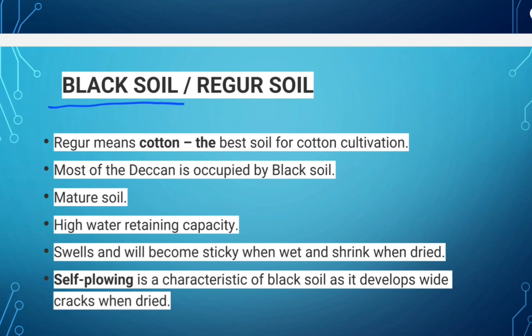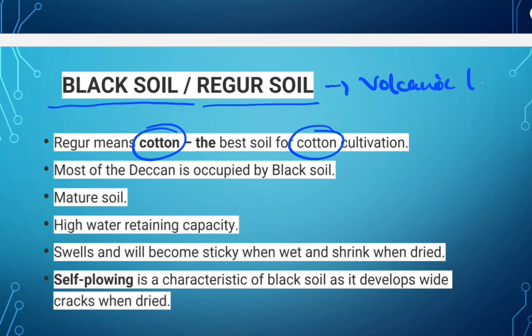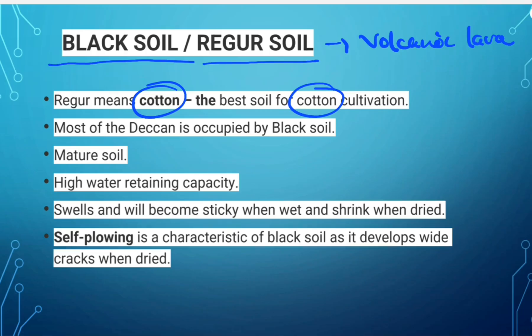Next is black soil, also called regur soil — 'regur' means cotton, and this is the best soil for cotton cultivation. Black soil is formed by volcanic lava. It covers most of the Deccan Plateau. This soil is a mature soil.